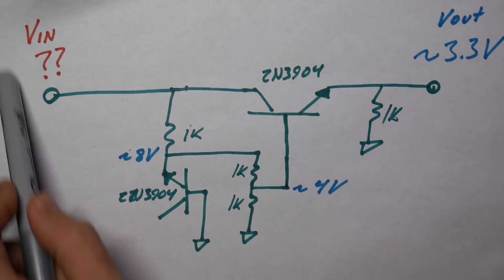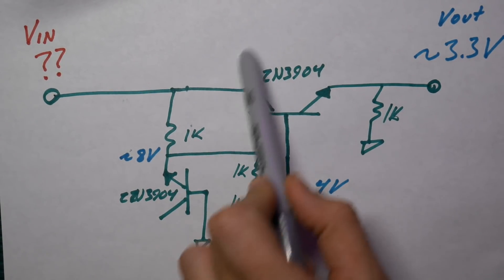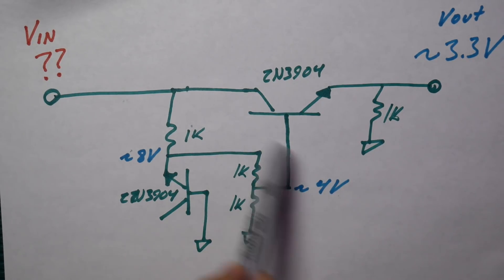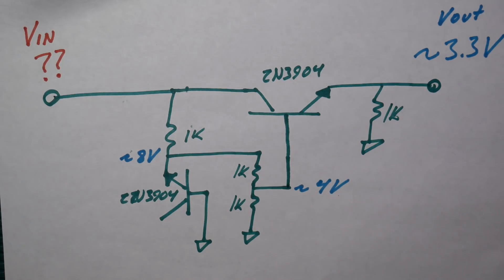So over here, we've got our input voltage into the circuit. This is the regulator transistor here. This circuitry down here is all to set up the reference to regulate the output to.